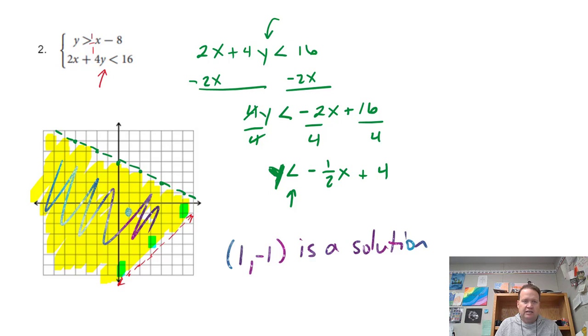And sometimes we're asked to identify something that's not a solution. Well, something that's not in the common shaded area, like that point right there, that would be 4, 4. 4, 4 is not a solution. And that's as much as we got to do.